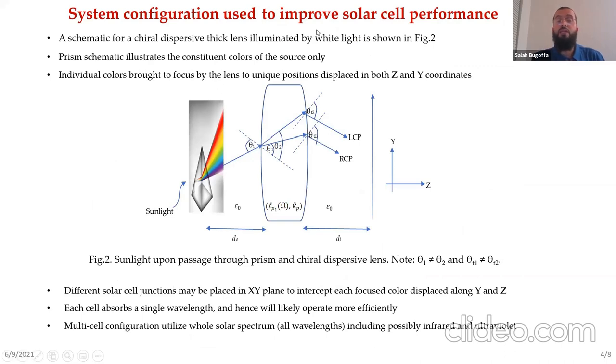This is the system configuration used to improve solar cell performance. Each color will have a unique image plane in the YZ plane. The prism here represents the wavelength of the source, which is sunlight. By placing different types of solar junctions in the YZ plane, each will intercept its focused color along YZ.